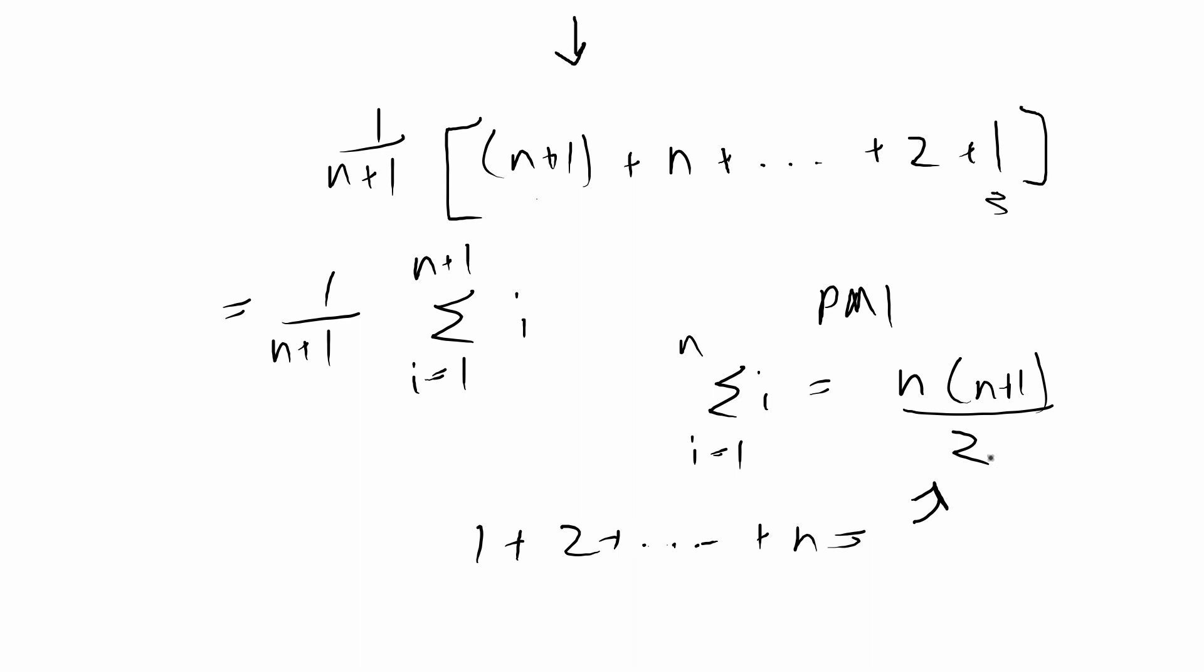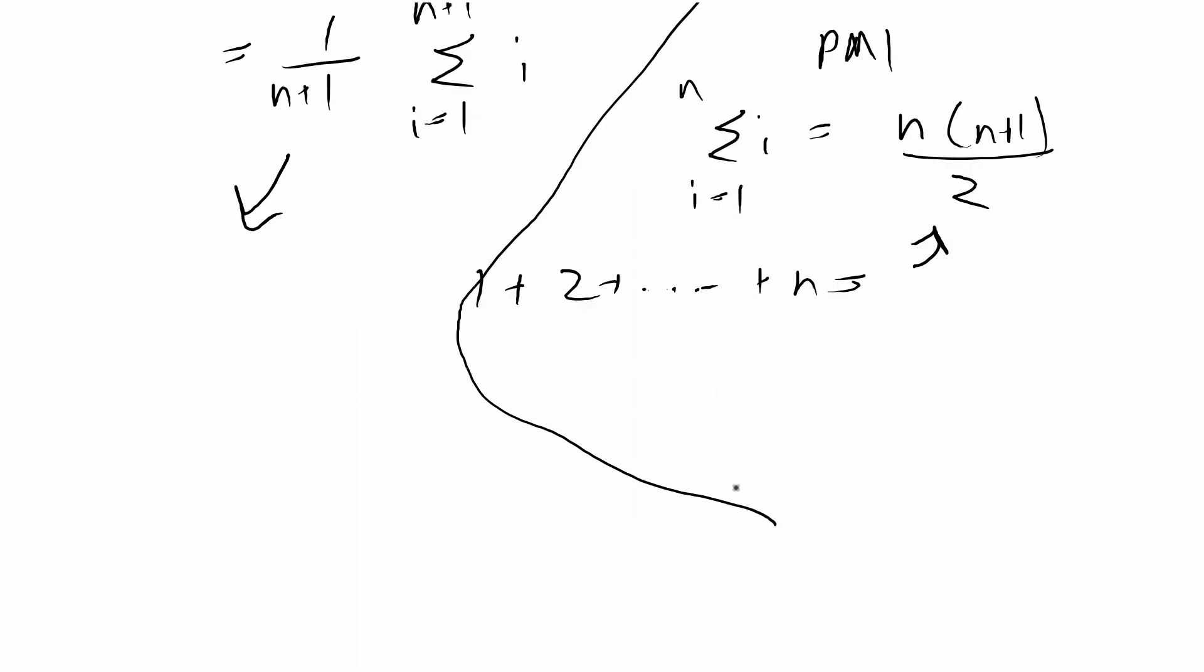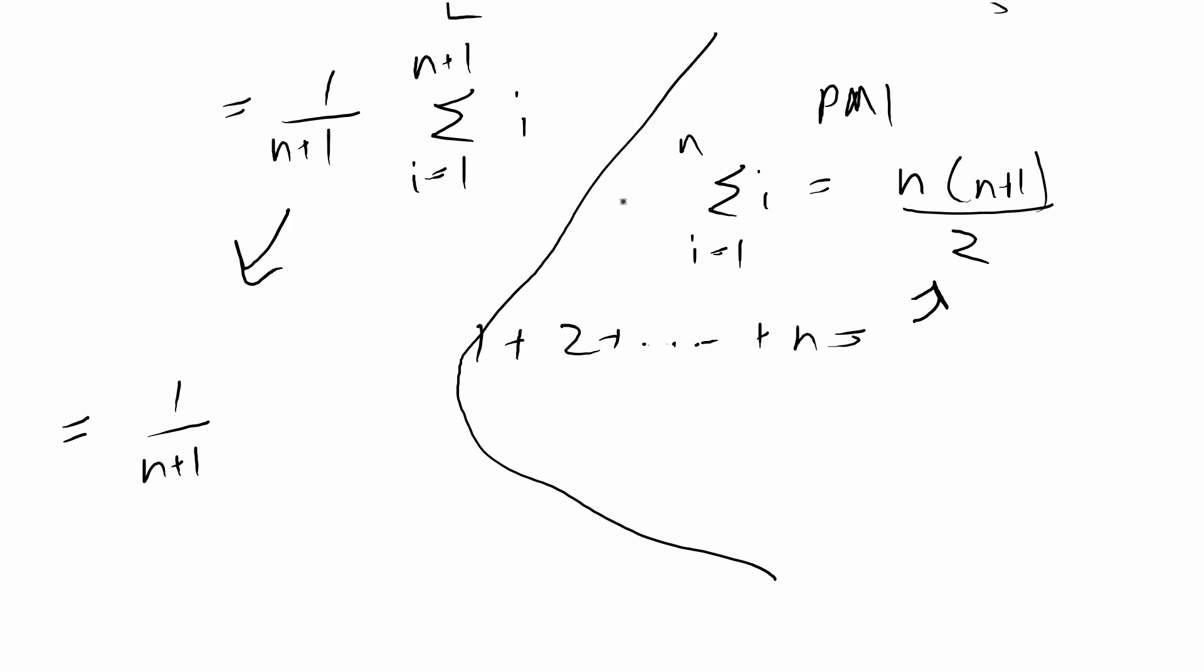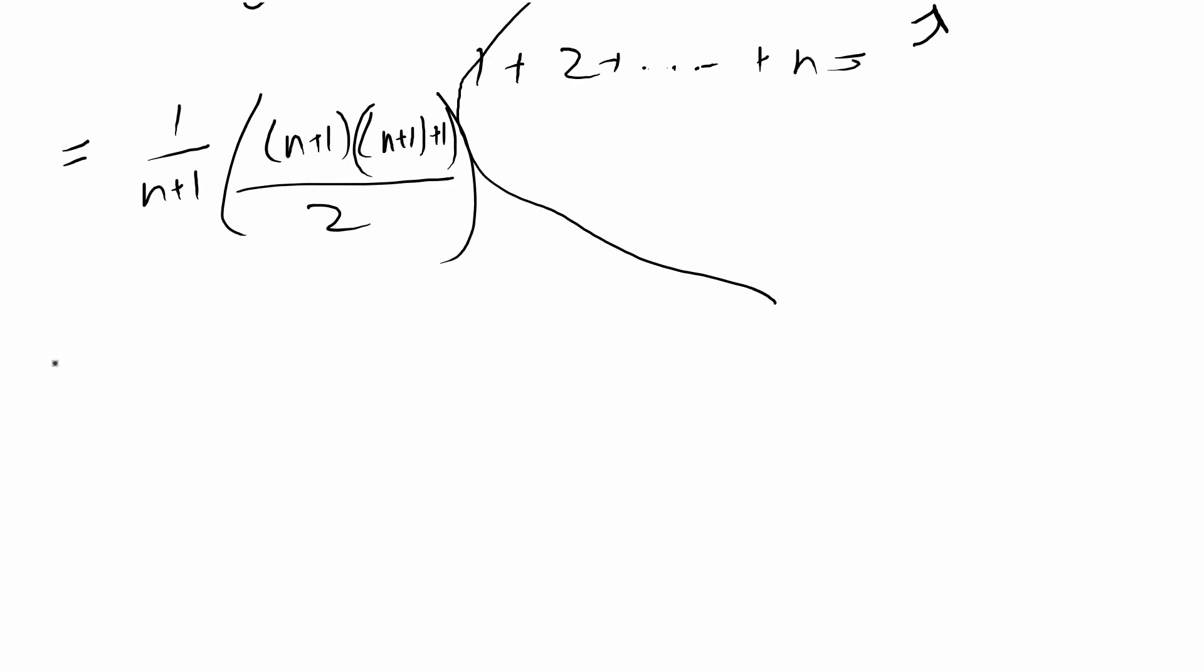This removes the i and the summation as well, so you can write this formula now in just terms of n's. We have 1 over n plus 1, and this one's a little bit different - we have n plus 1 instead of just n. So this would be times n plus 1 times n plus 1 plus 1 over 2, which is 1 over n plus 1 times n plus 1 times n plus 2 over 2.